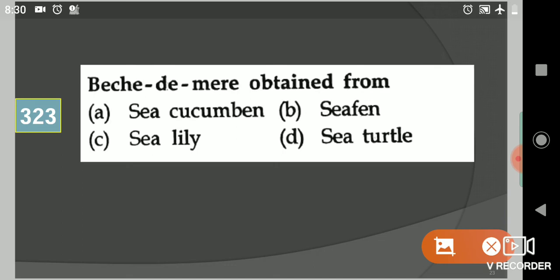Next question: Which dye may be obtained from? Your options are C. curcumin, C. fenn, C. lilly, C. turtle. Your answer is C. curcumin.